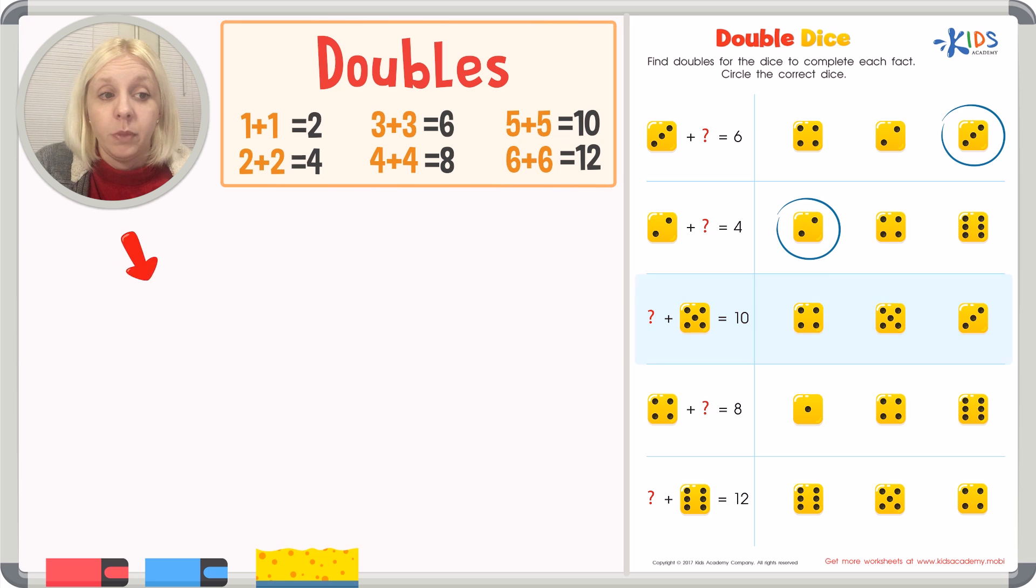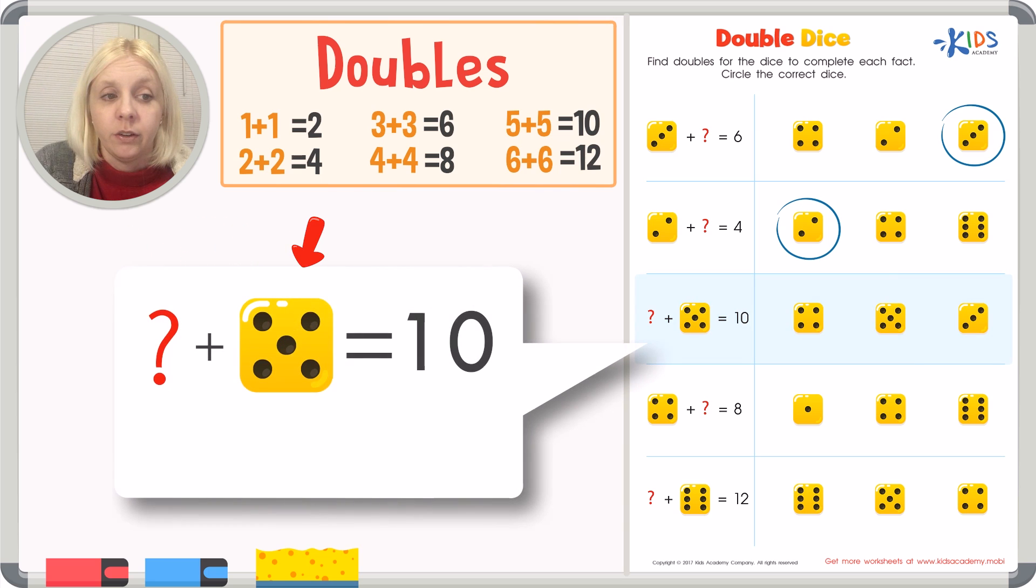The next one is something plus five equals ten. Now this one's a little bit different because at first we had the dice in the beginning of the number sentence, but now we've got a big question mark. But it's still going to be the double of this dice right here. So this one is actually five plus five equals ten. We're going to come over here, circle the five. Which one's five? This one's four, this one's five, and this one's three. So this one is the one that we need, right? We're looking for five or the double.